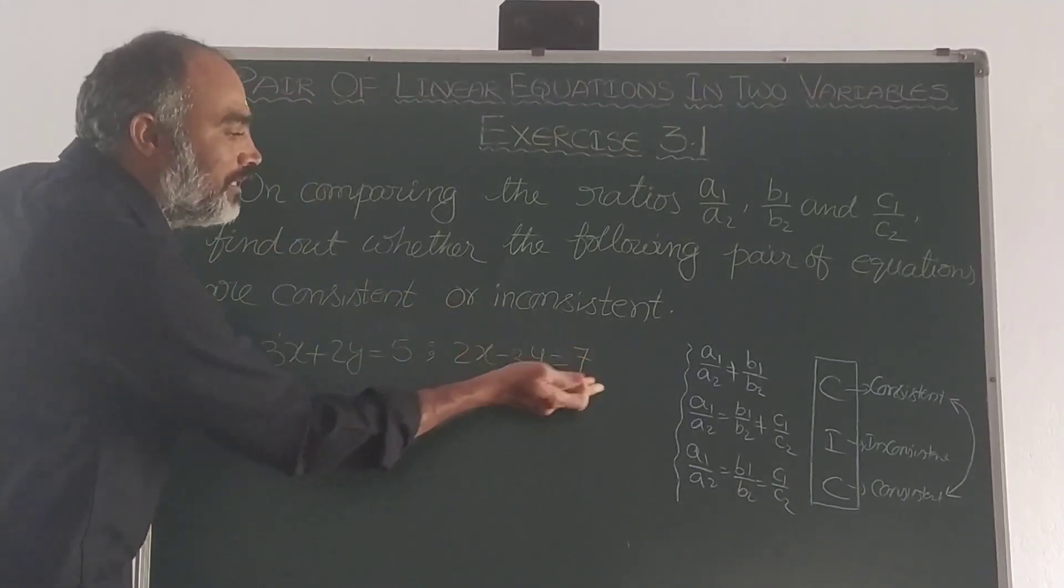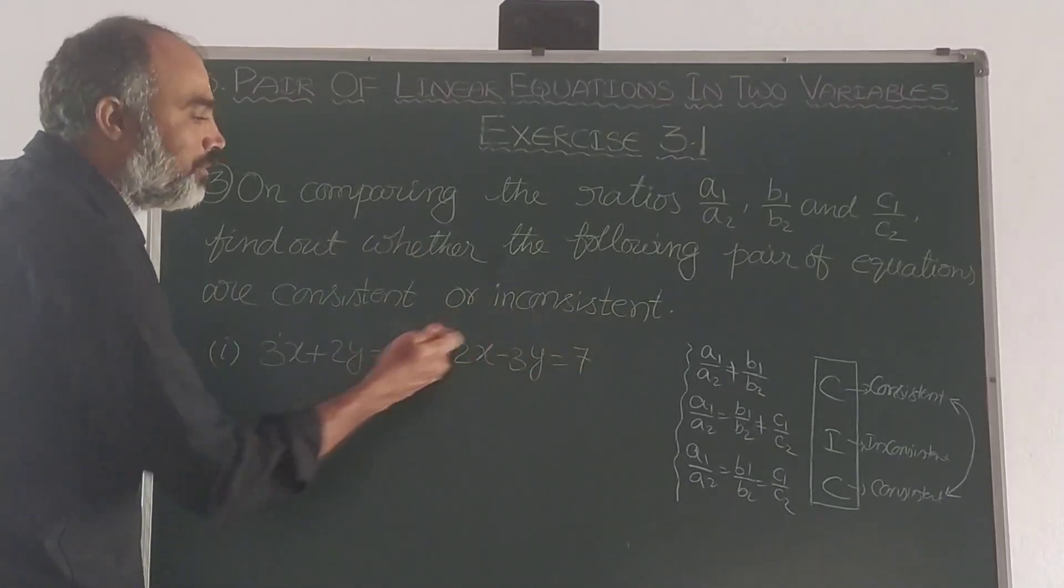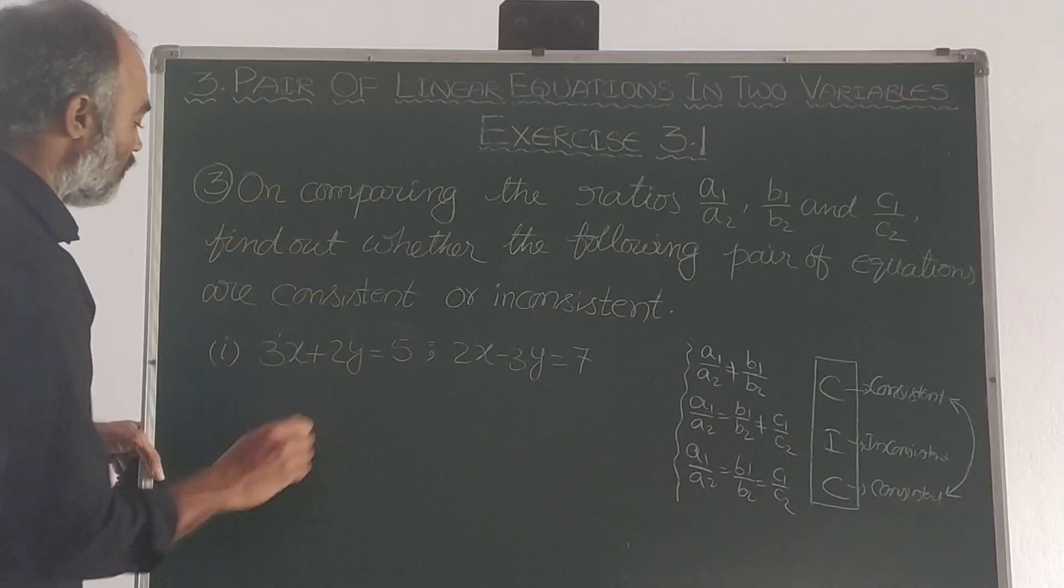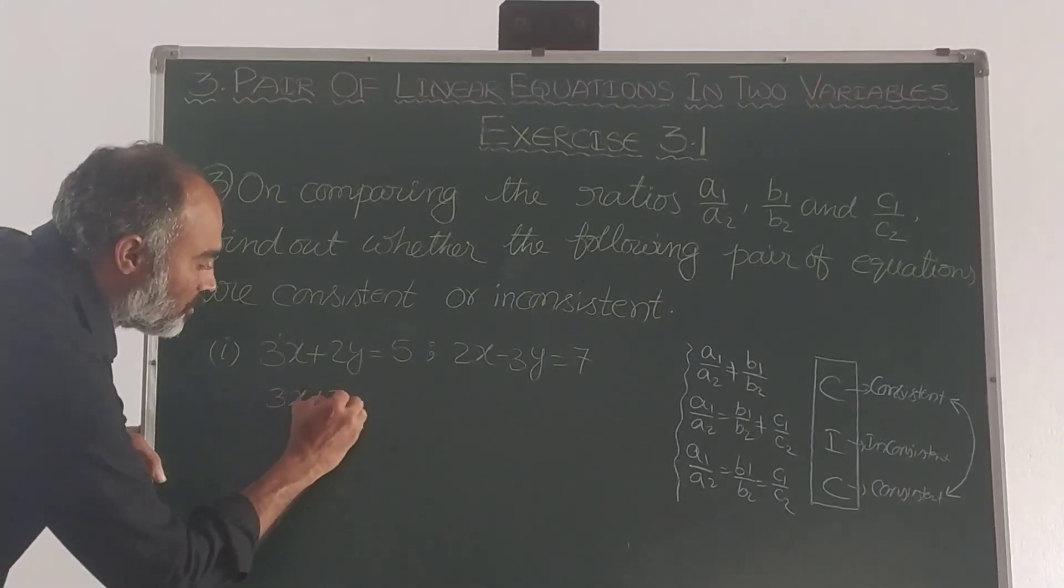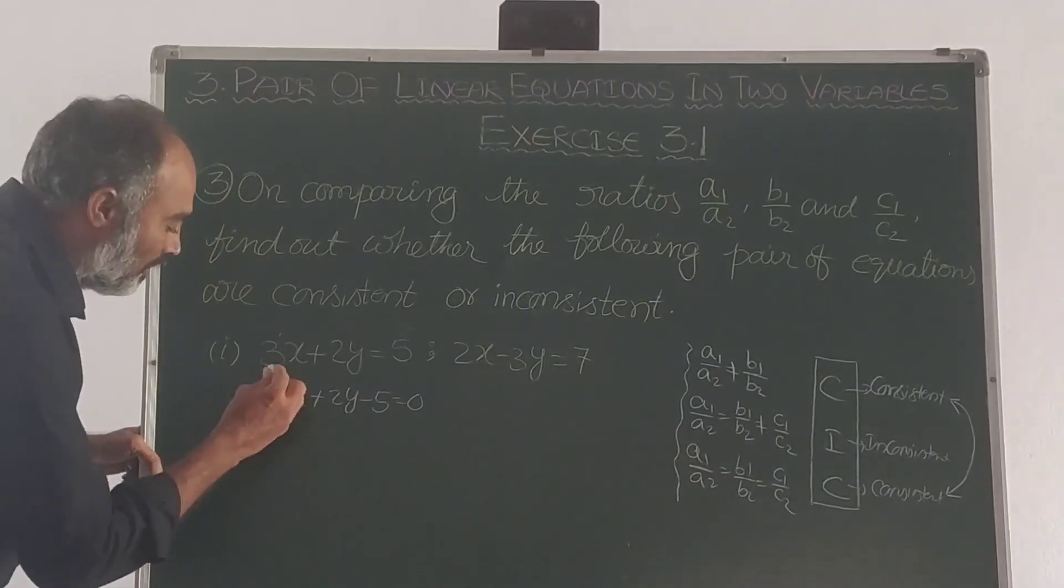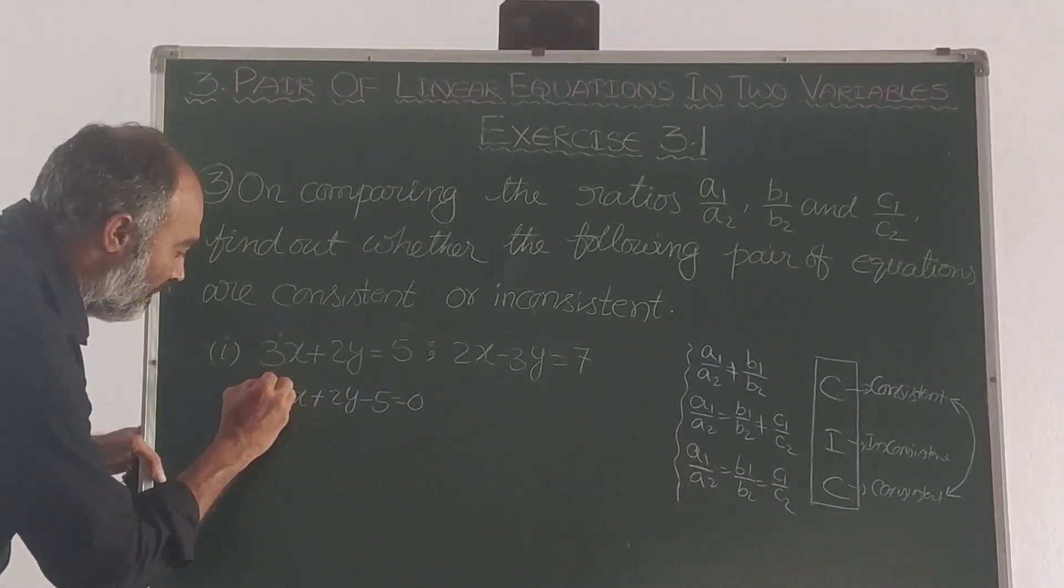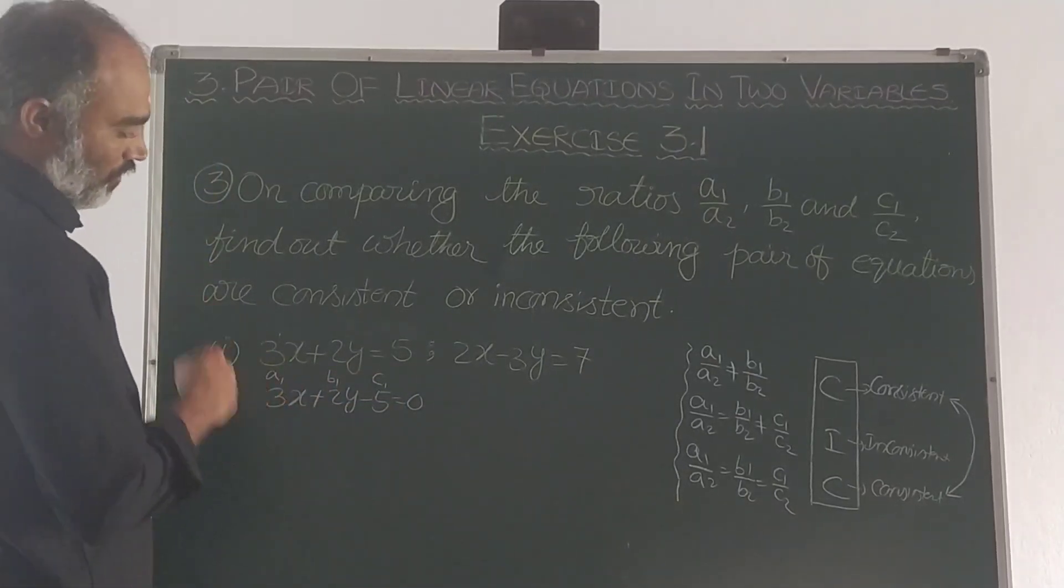So the general method is: 3x plus 2y minus 5 equal to 0. Then a1 is 3, b1 is 2, and c1 is minus 5.